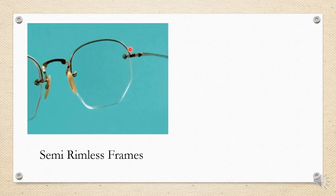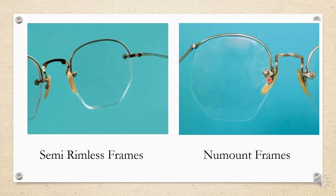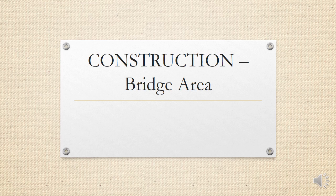Another type of rimless is the new mount frame, now rarely used due to its tendency to break. It appears to have a frame for cosmetic purposes only; the entire lens is held by a single screw at the nasal part. This design caused the lens to rock or become unstable, causing patient discomfort and a very high risk of lens breakage.